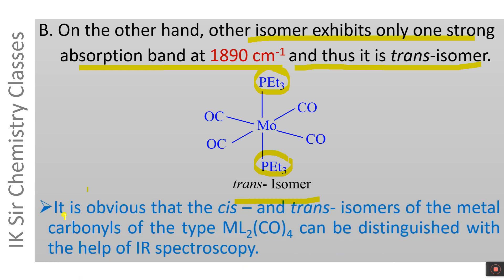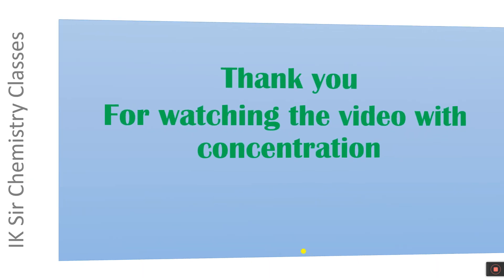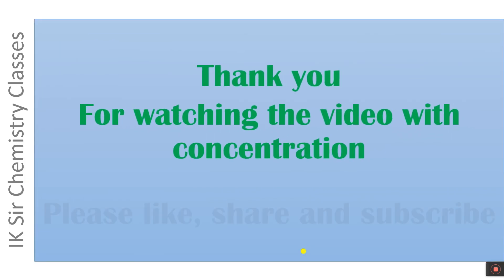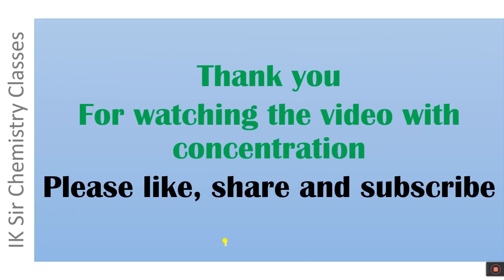It is obvious that the cis and trans isomers of metal carbonyls of the type ML₂(CO)₄ can be distinguished with the help of IR spectroscopy. The cis isomer exhibits four absorption bands in the IR spectrum, while the trans isomer exhibits only one absorption band. Thank you for watching the video. Please like, share, and subscribe.